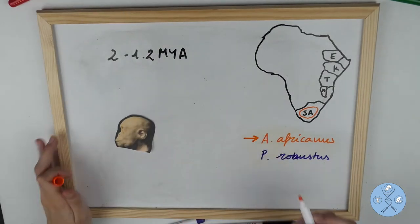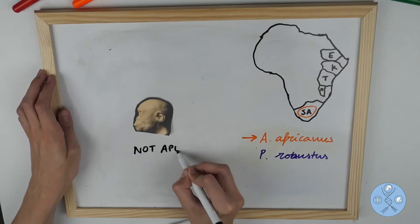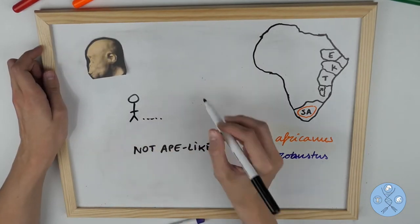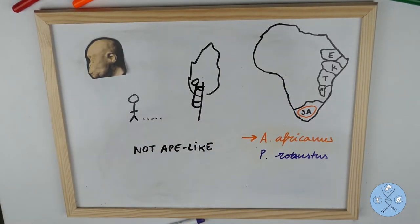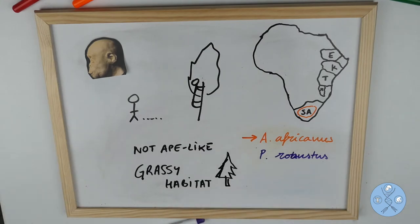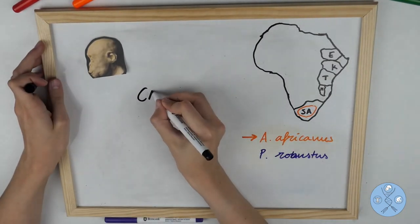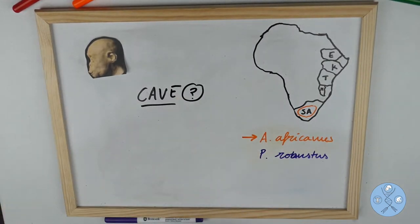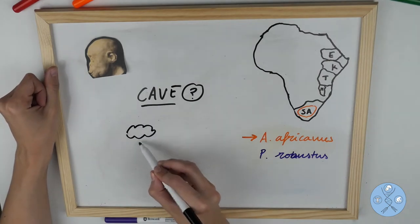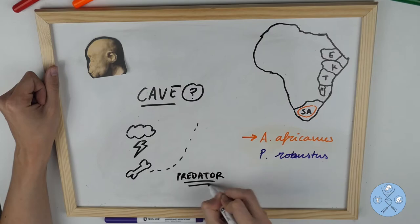Australopithecus africanus had large chewing teeth and its skull wasn't ape-like. It could walk bipedally, but it was also capable of climbing trees, so it is suggested that its habitat was grassy forest-like. There is no evidence that either Paranthropus robustus nor Australopithecus africanus lived in the caves, so as we said earlier, it is likely that some predators brought their bones to the caves.